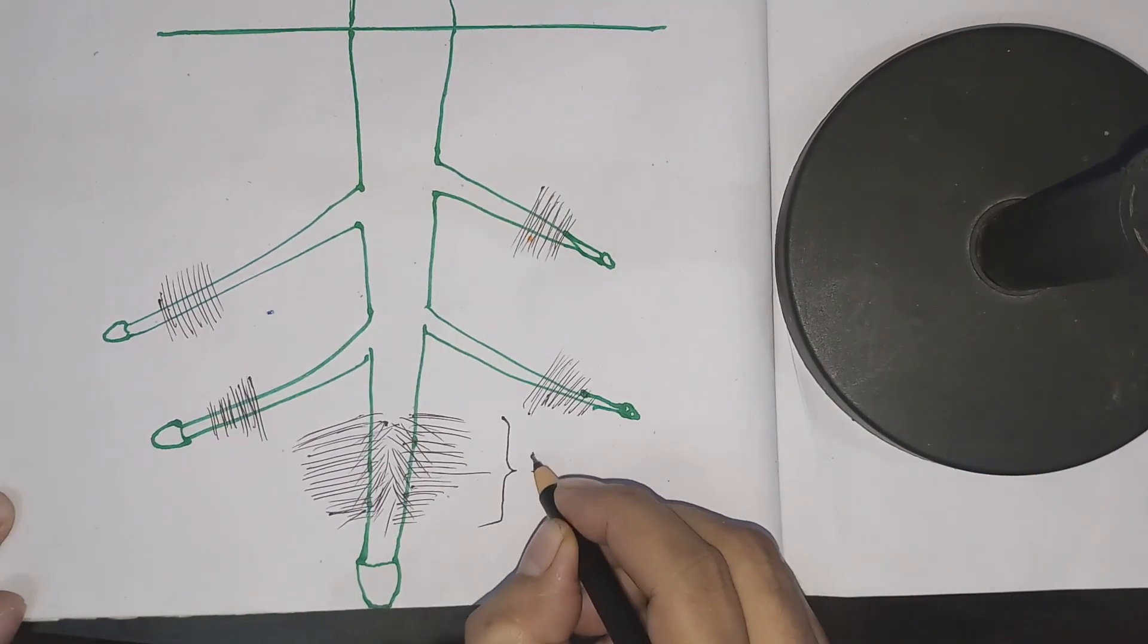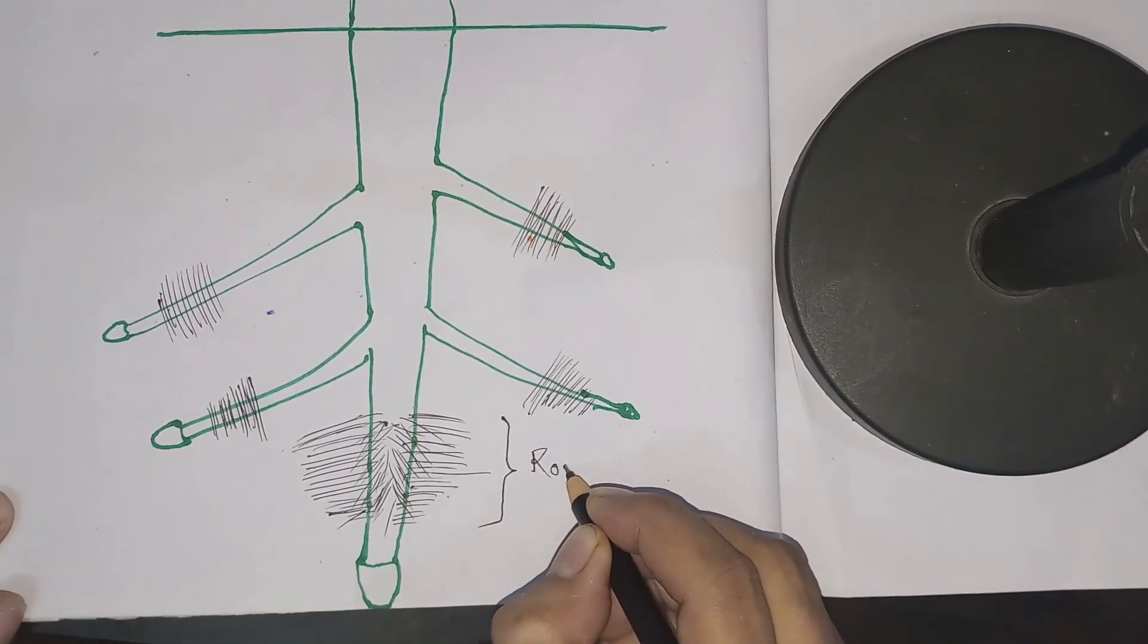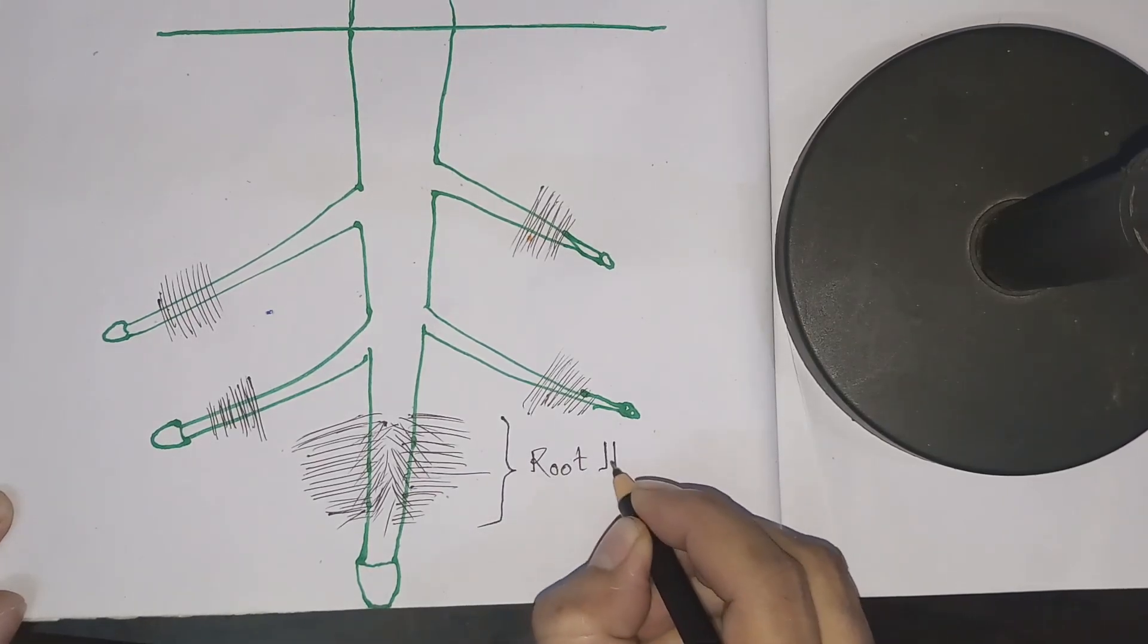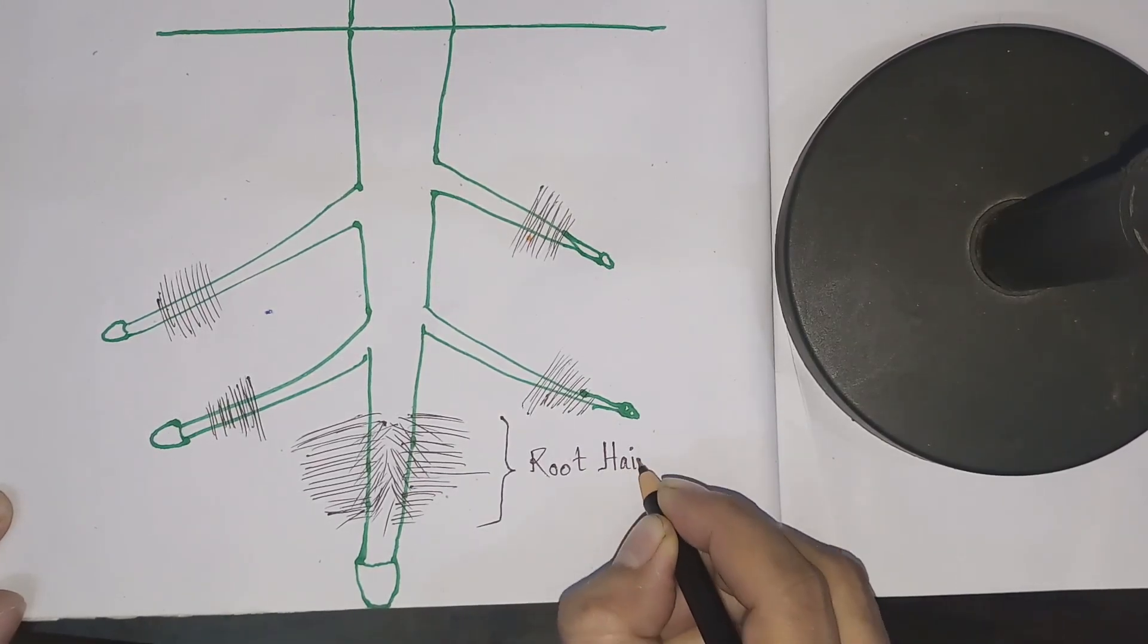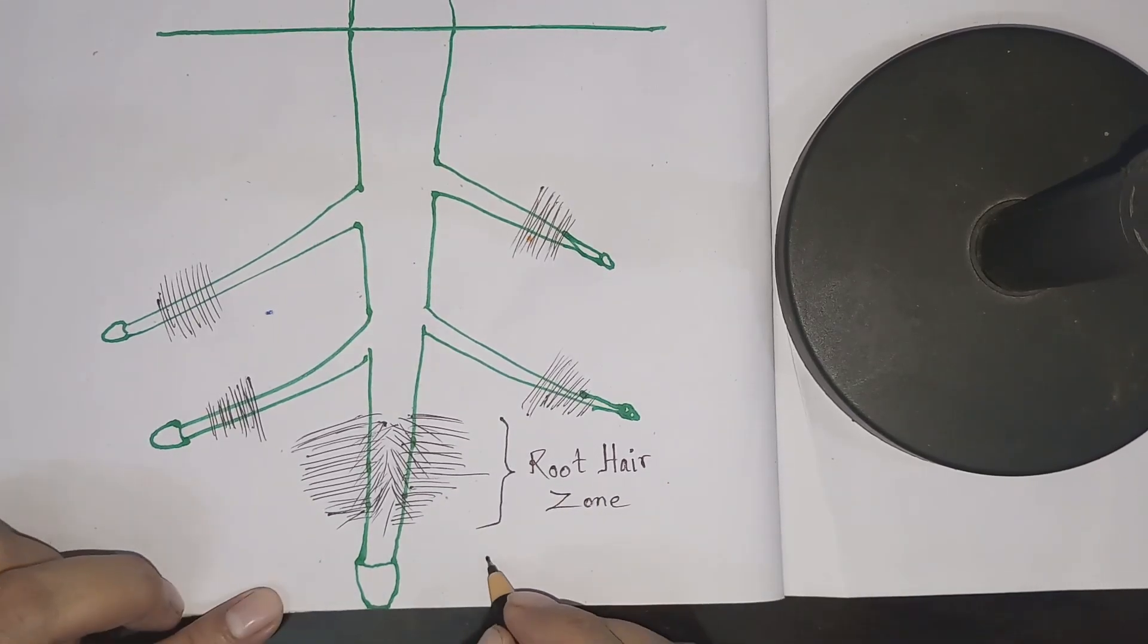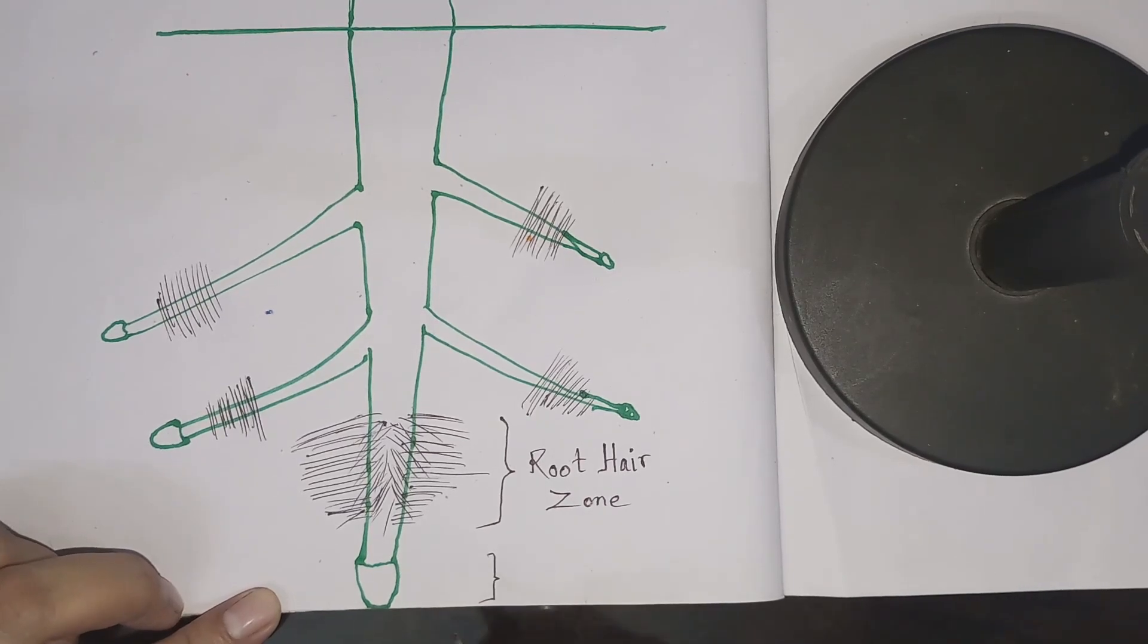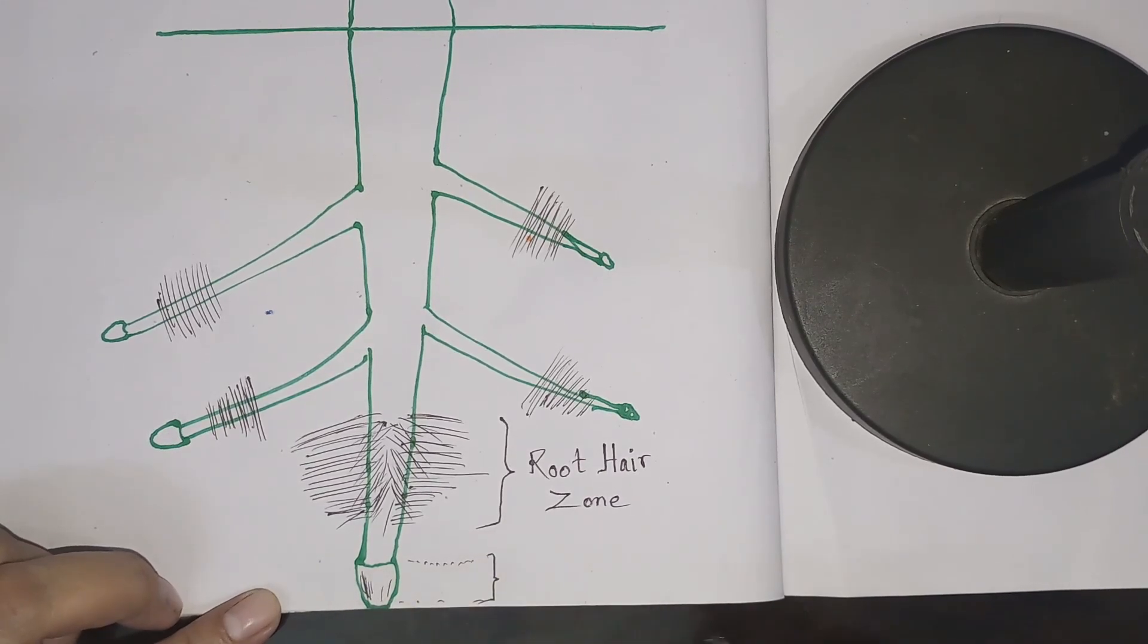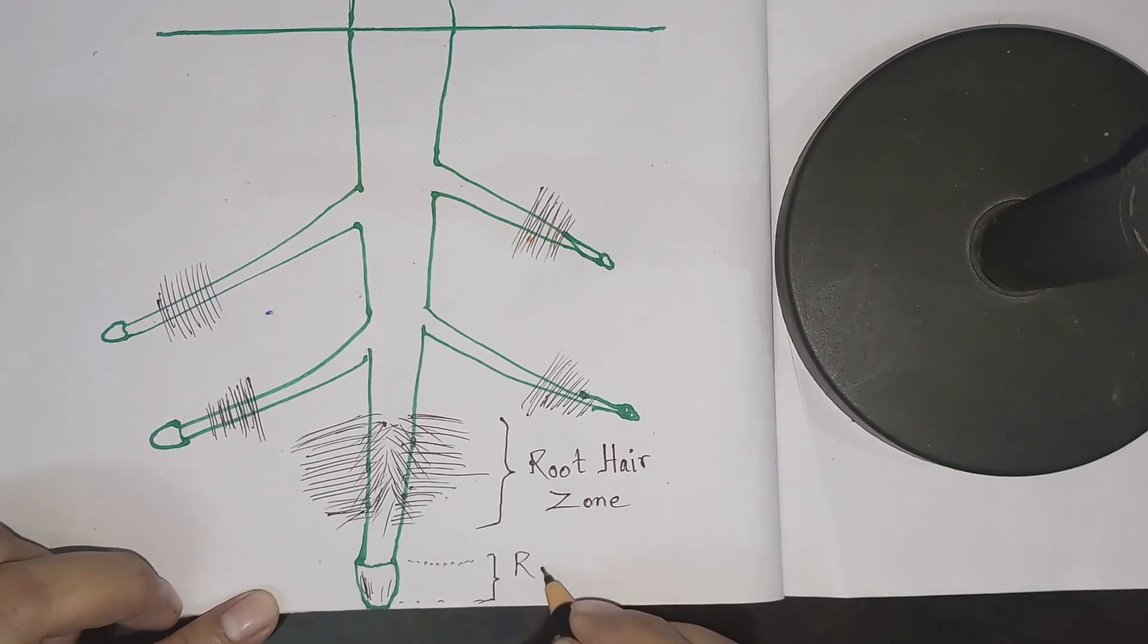So this is the root hairs zone. The zone occupied by the root cap is known as root cap zone.